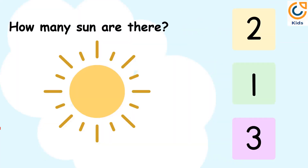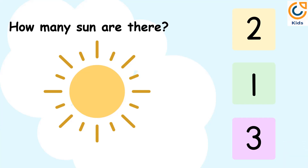How many suns are there? Let's count the number of suns. 1. There is 1 sun. So, the answer is 1.